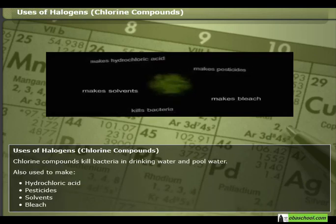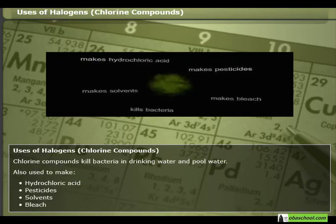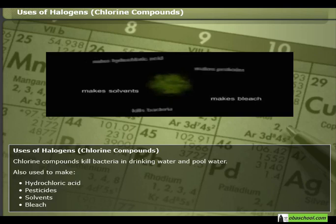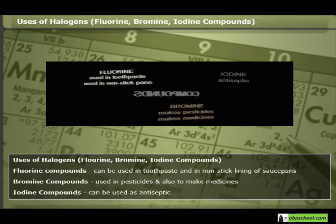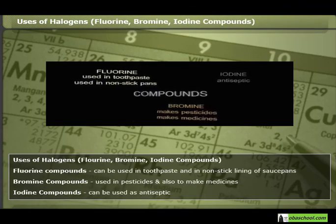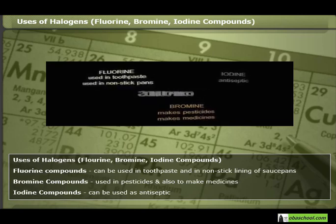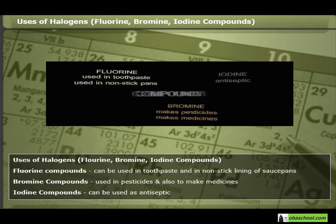Chlorine compounds kill bacteria in drinking water and pool water. Also used to make hydrochloric acid, pesticides, solvents, and bleach. Chlorine compounds can be used in toothpaste and in non-stick lining of saucepans. Bromine compounds are used in pesticides and also to make medicines.